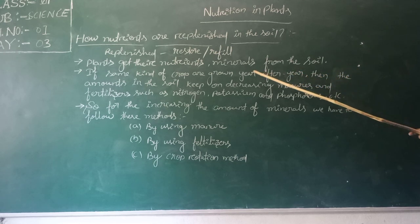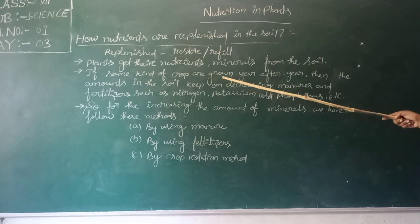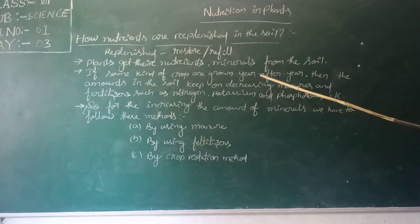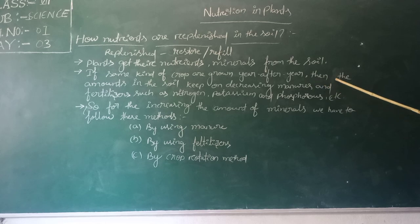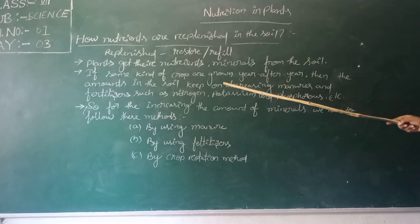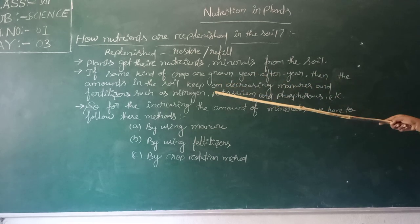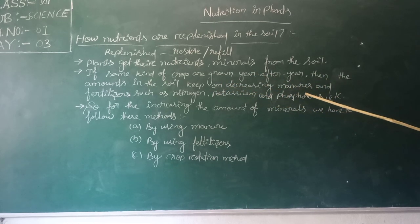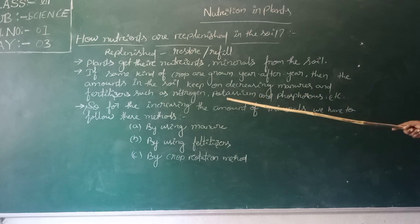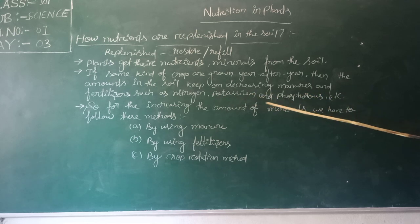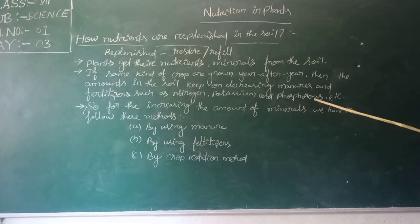If the same type of crop is grown year after year in the same field, the amount of manure and fertilizers decreases. The fertilizers include nitrogen, potassium, phosphorus, etc.